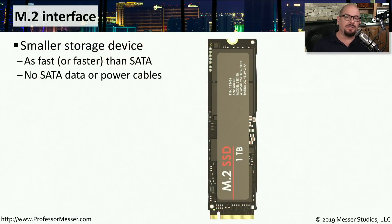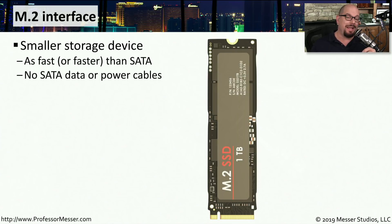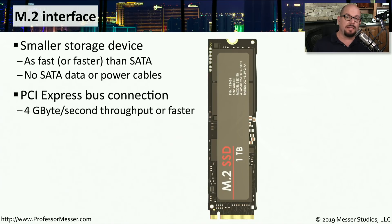Another type of interface to an SSD is the M.2 interface. You can see this is a much smaller device, very similar in size to a memory module that you might have in a desktop computer. One of the advantages of the M.2 is that it has a very fast speed of access. You're not plugging in a SATA data cable or SATA power cable — there are no SATA cables associated with this at all. It connects into an M.2 interface directly on the motherboard, which gives direct access to the PCI Express bus, and that's how we're able to get such high throughput to an M.2 device.